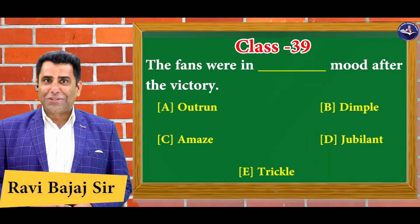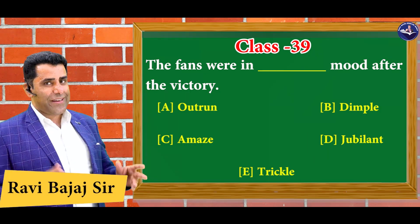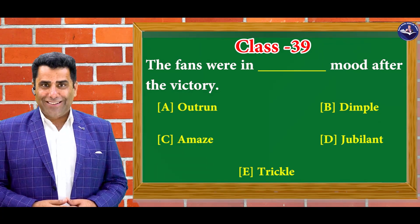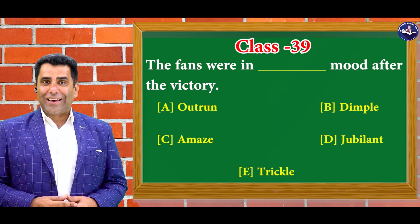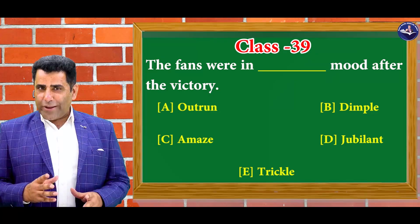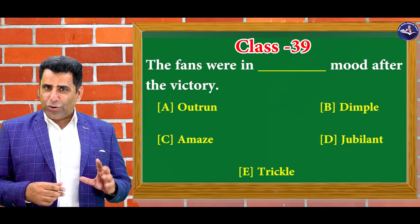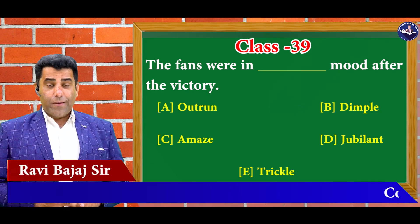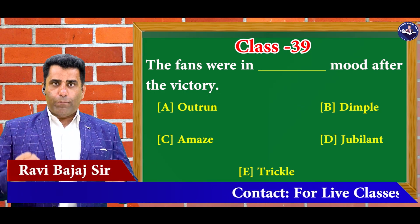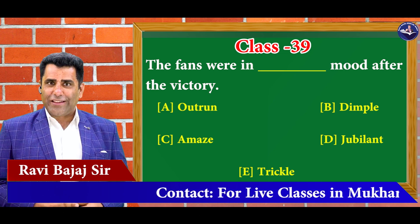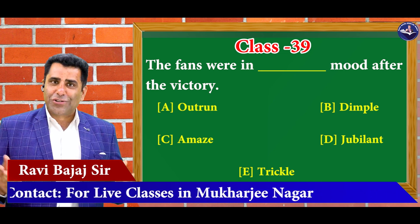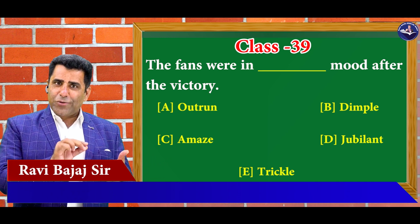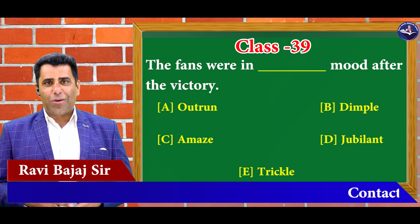Hello guys, welcome to this vocab session. Aapke saamne ek prashn hai, 5 options hai, you have to find out the correct one. Kya problem hai? 5 mein se ek meaning haata hai. Kaya aisa to nai hai ki aap answer to dhe pa rhe hai but ek do word aur confuse kar rhe hai aapko. Ji haan, ye toh vocab ki game hai. Agar vocab aatii hai toh aap bhi zyada confident ho jate hai. Toh chaliye seekhte hai audio aur technique se — har word ke liye mein aapko dikhhane waala ho ek picture, link likhenge uske aagay, aur ye word ho jayega aapko hamesha ke liye yaad.